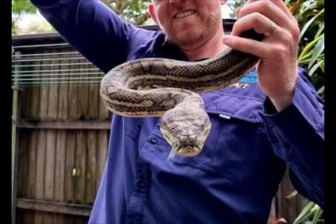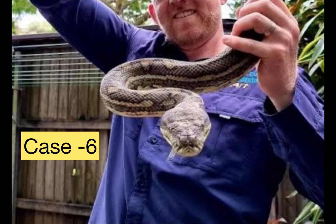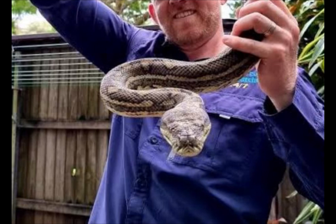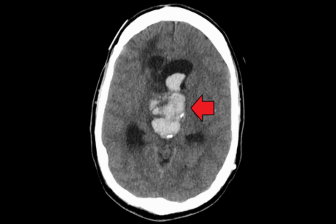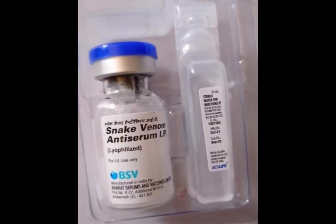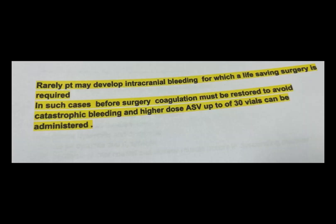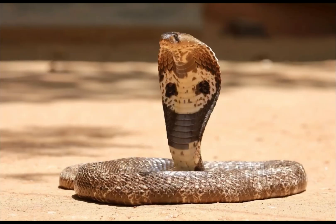Next case: A patient with viper bite developed intracranial bleeding and is being taken for surgery. Rarely, patients may develop intracranial bleeding requiring life-saving surgery. In such cases, coagulation must be restored before surgery to avoid catastrophic bleeding, and higher doses of ASV — up to 30 vials — can be administered.